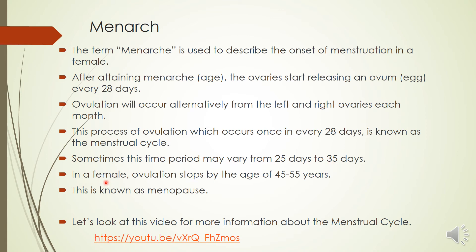In a female, ovulation stops by the age of 45 to 55 years, so this ovulation is not forever. Within the age range of 45 to 55, it may stop. And this stopping of ovulation is called menopause.